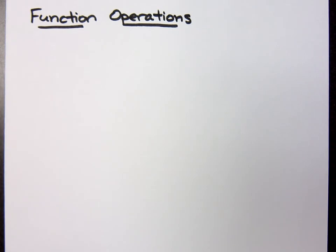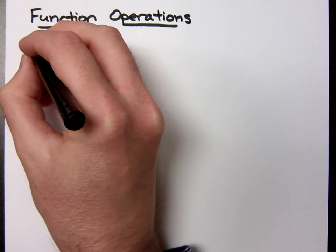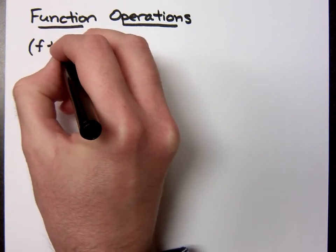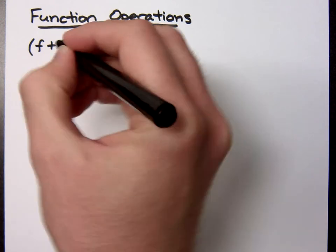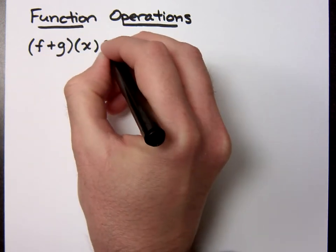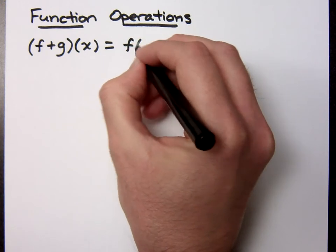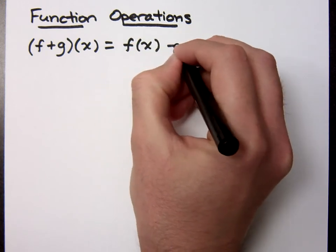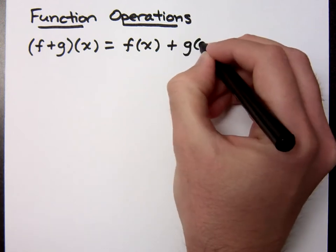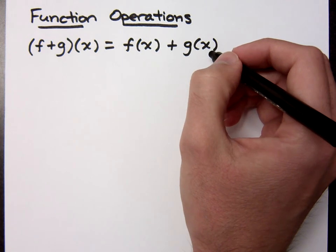Let's talk about function operations. When you see this kind of notation, this is what it becomes. F plus G of X really just means F of X plus G of X. That's all we have to do.